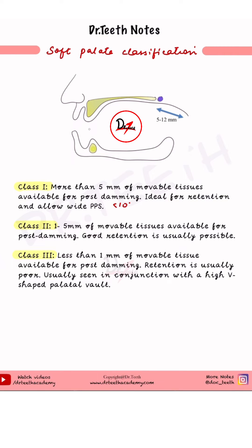Class 2 has 1 to 5 mm of movable tissue. While class 1 has more than 5 mm, class 2 has 1 to 5 mm, and the angle here is around 45 degrees. This is going to be a little steeper.